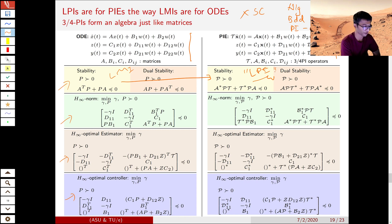And hence, now we have results, or LPI optimization problems, that help us in testing stability or finding h-infinity norm, designing estimator and controller for PIEs, and consequently any system that can be converted to PIEs.